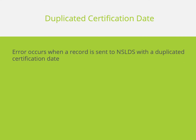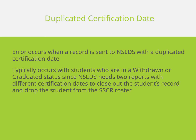This next scenario for Error Code 32 is for duplicated certification dates. This scenario typically only occurs for students who are in a withdrawn or graduated status. This is due to NSLDS needing two reports of a separated status with different certification dates in order to close out the student's record and remove them from the roster. The clearinghouse processes automatically send the second report of a separated status with the certification date from your last file. However, depending on the timing of files and other updates, occasionally NSLDS reporting happens again before the next file is processed, which can result in these errors.